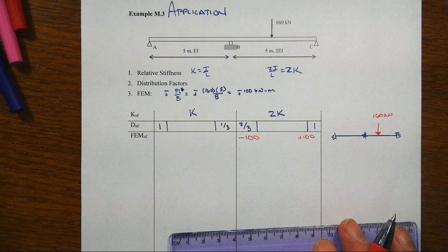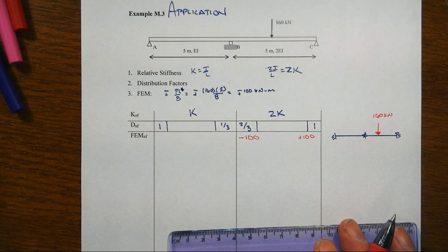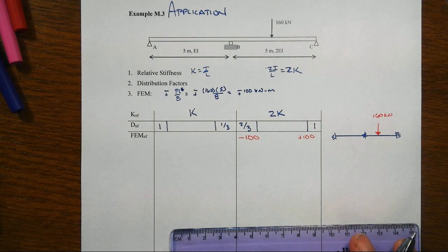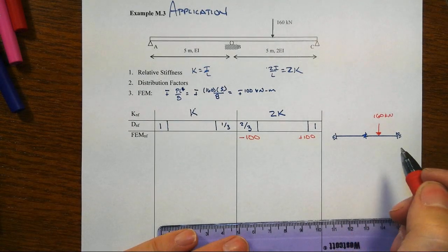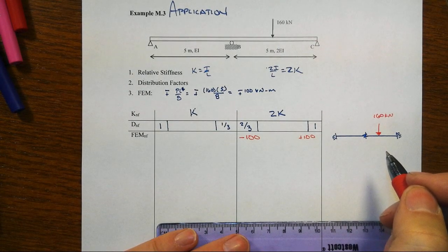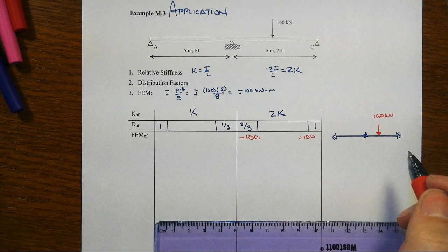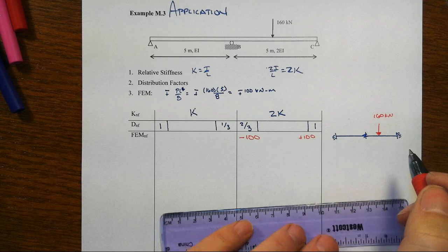Okay. So now what we're going to do in the process is we are going to alternately release a joint, let it equilibrate, and then we're going to see what carryover effects we have. And then we'll lock the joint back down and we'll release another joint.